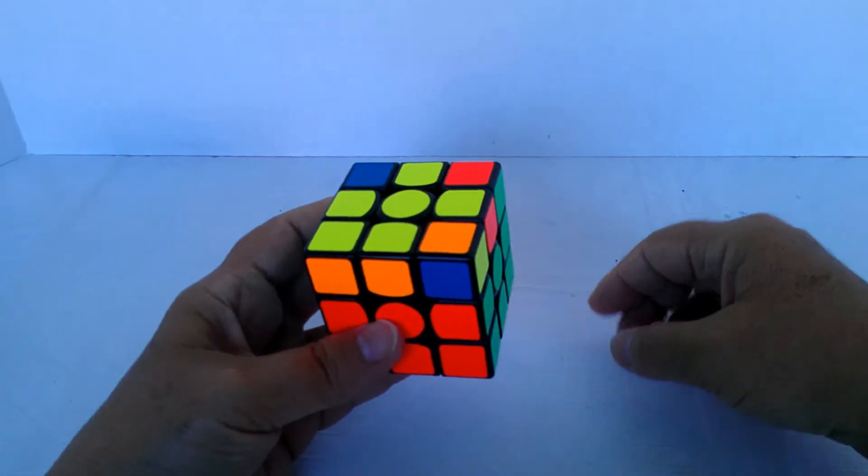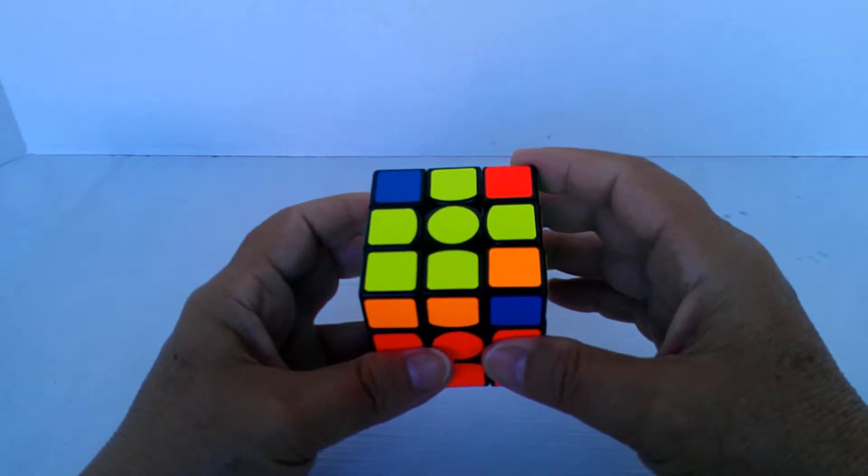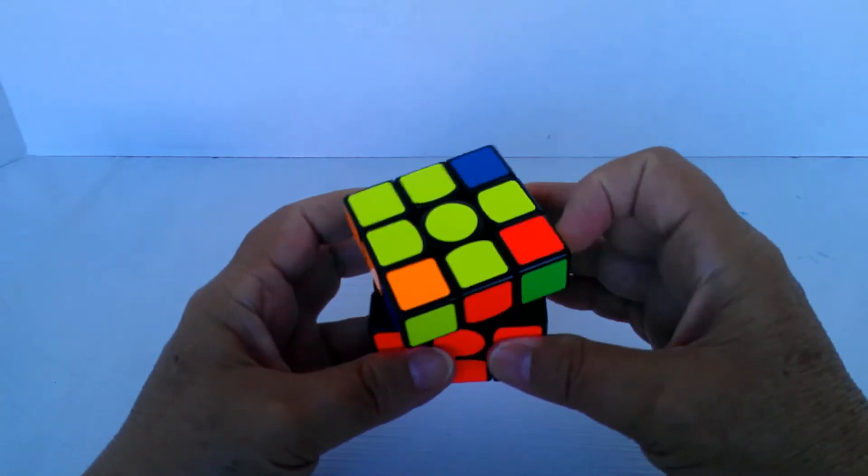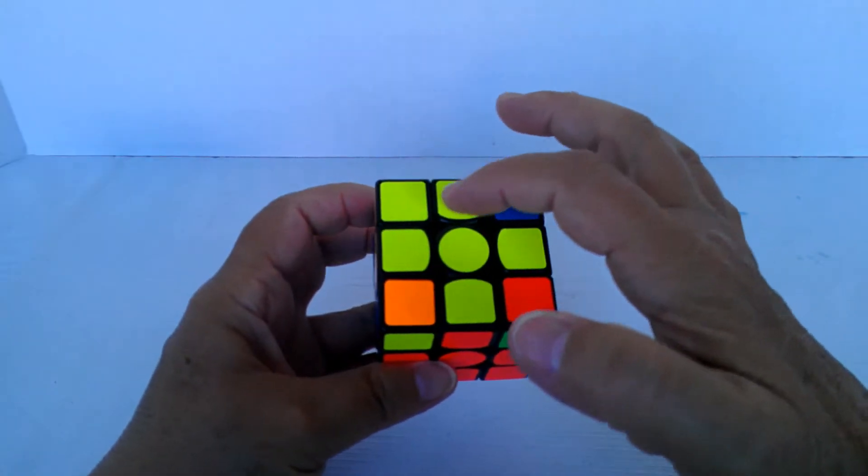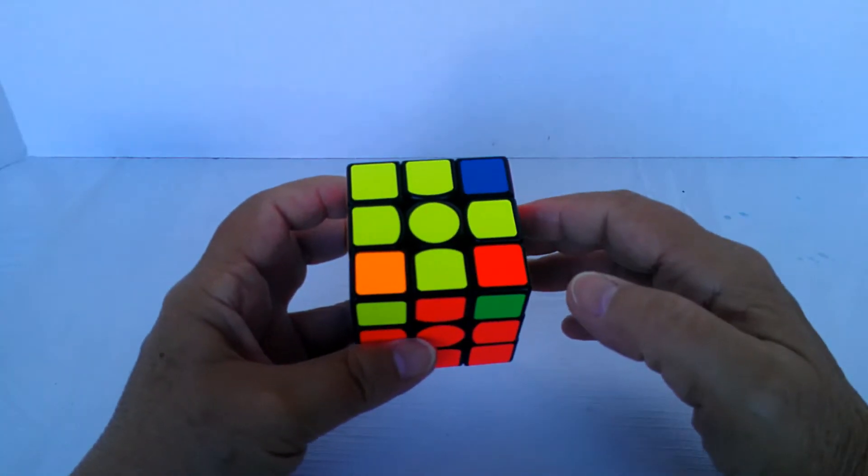What you want to do to set up for the anti-sune is either rotate the slice or the cube so that the yellow corner is in the upper left, in this case.